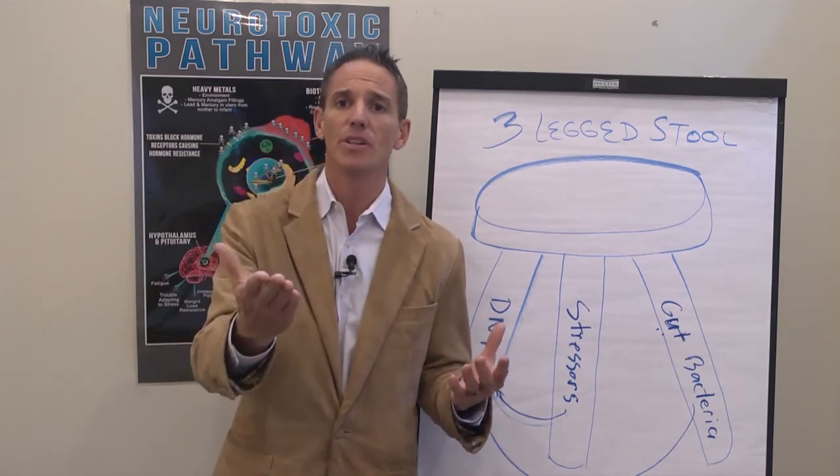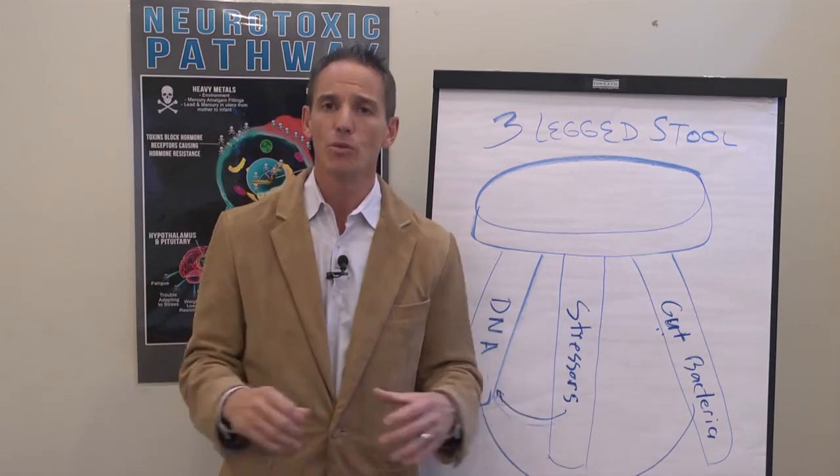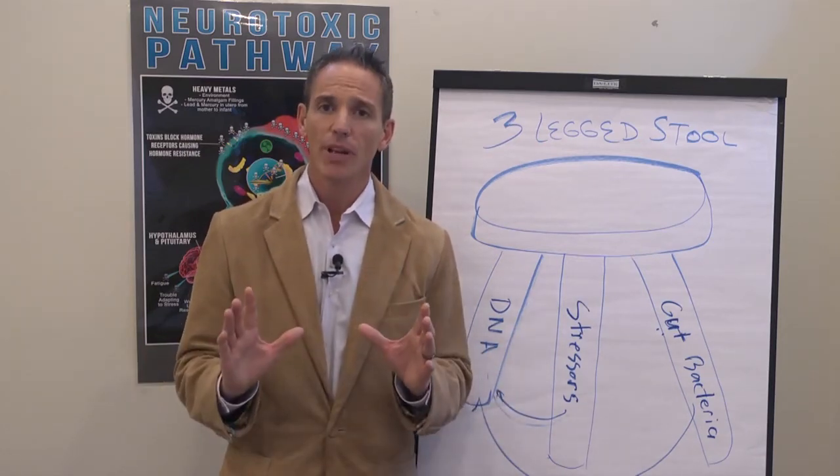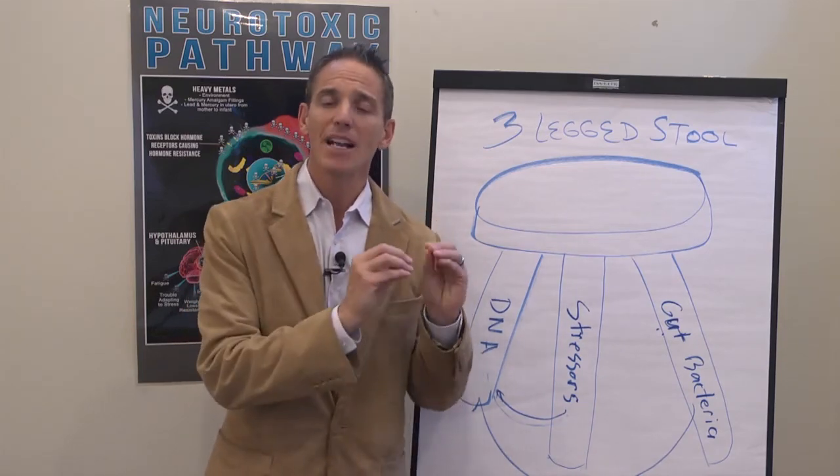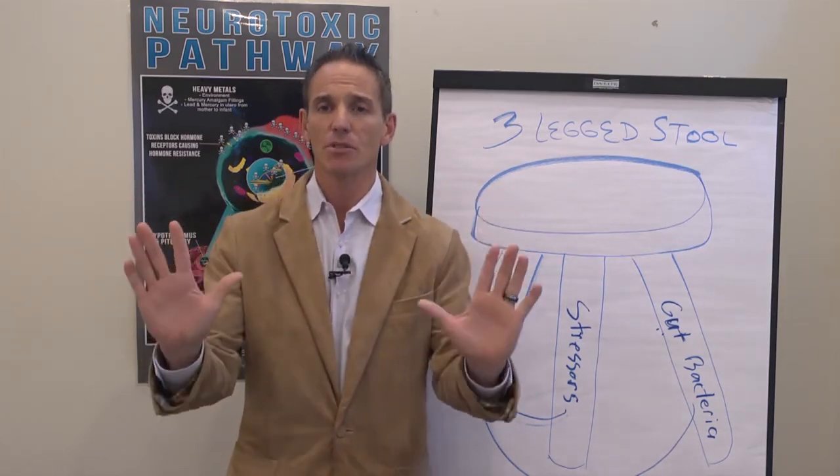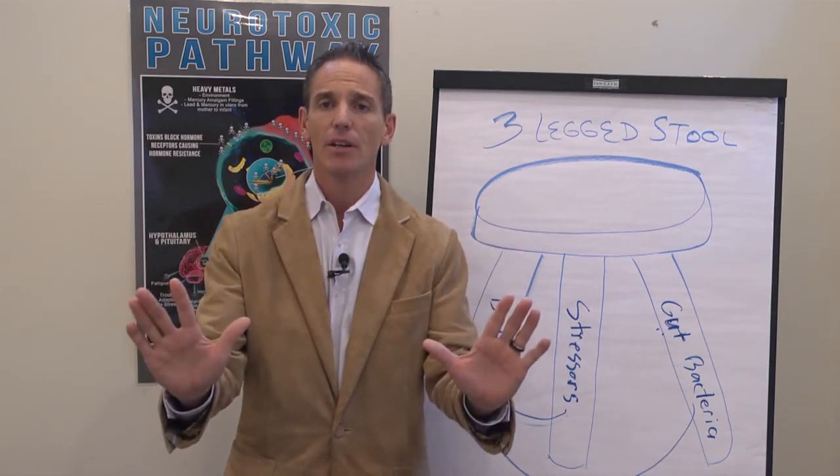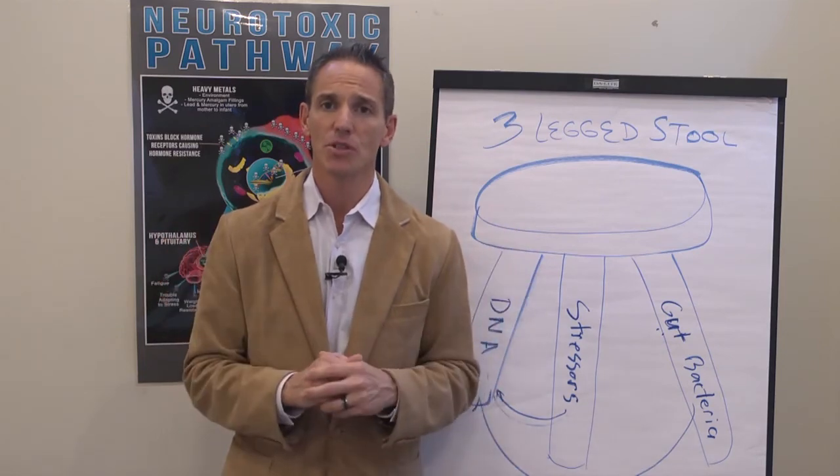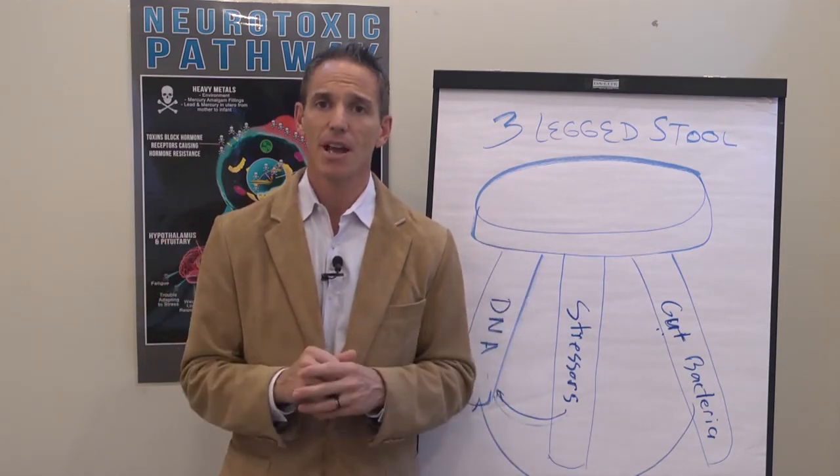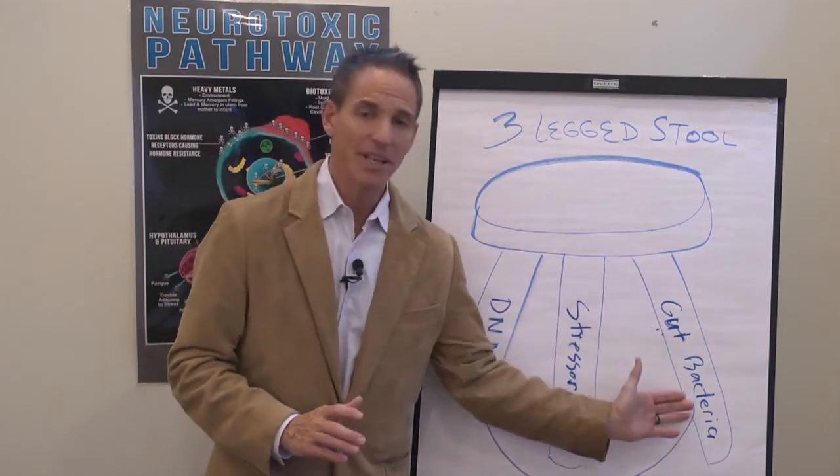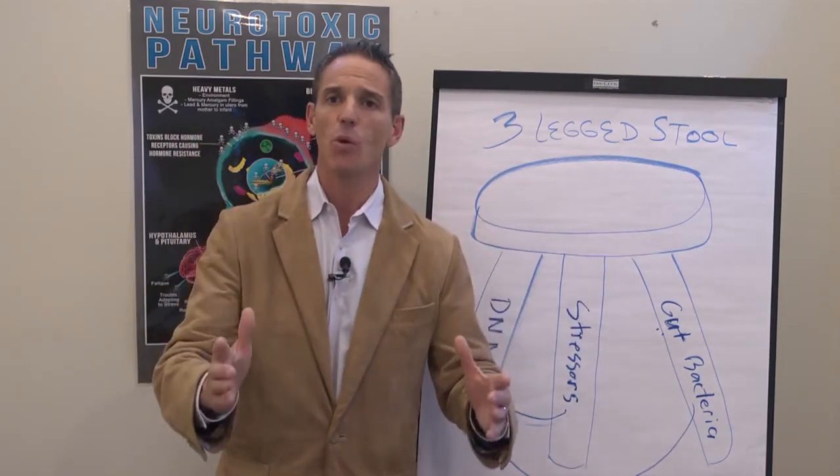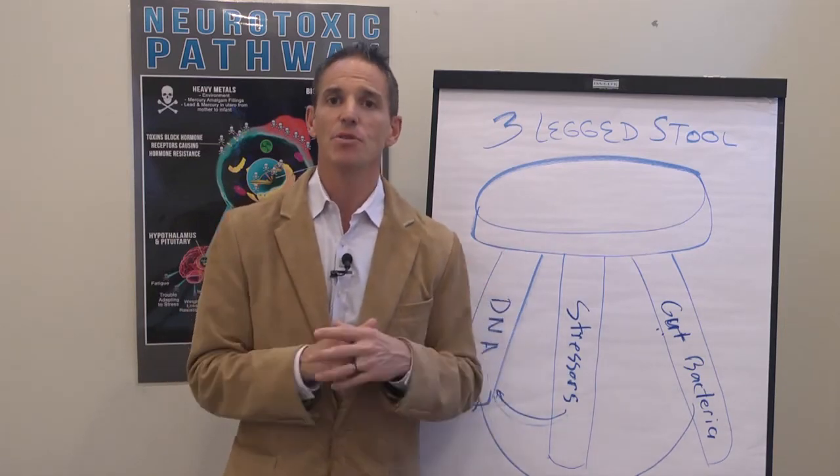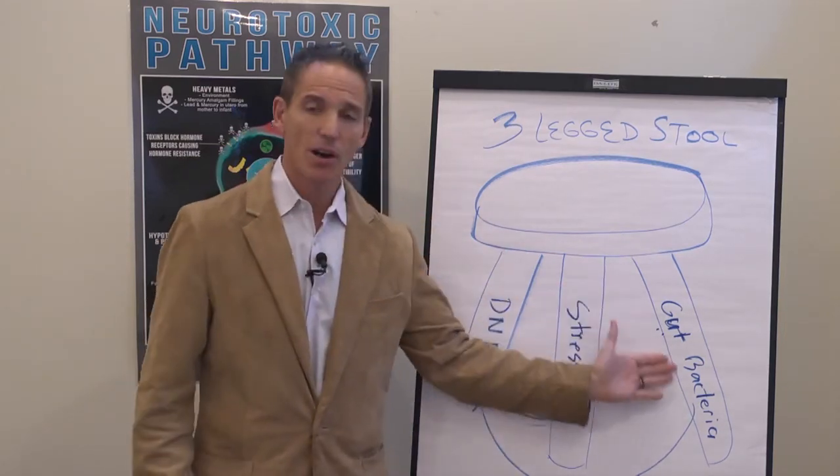We label these autoimmune conditions based on the tissue attacking. If it's attacking the skin, we call it lupus. If it's attacking the joints, we call it rheumatoid. If it's attacking the gut, we can call it Crohn's or celiac. But here's the point. When you're missing certain bacteria, you don't make enough of these cells to tell your immune system to slow down, back off. And now, all of a sudden, you're in a state of inflammation driven by your own immune system. This is an epidemic. Part of the solution has to be to replace these bacteria. I don't care if you can't lose weight, if you're depressed, not thinking clear, brain fogged, or have an autoimmune condition. This is a part of the solution.